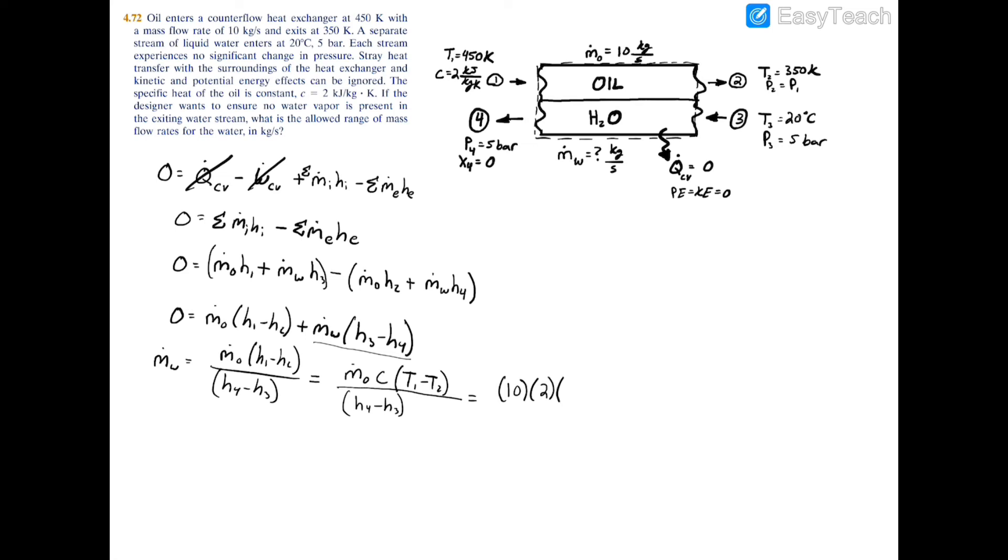Now let's plug in what we have. M dot o we have 10 kilograms per second, and then the specific heat was just 2 kilojoules per kilogram Kelvin. T1 minus T2 would be 450 minus 350 Kelvin, and that's everything for the oil. Now for the water we have h4 and h3.